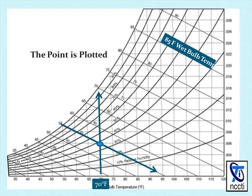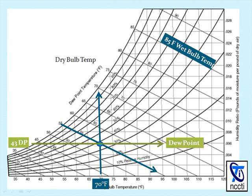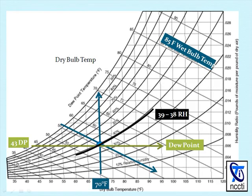From this intersection, the rest of the values can now be found. The horizontal dew point line is now drawn, and a 43 degree dew point value is determined. The relative humidity value is at 38 to 39%.